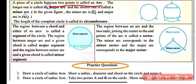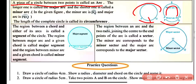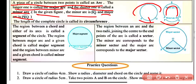A piece of the circle between two points is called an arc. Here we have two points P and Q on the circle. The shorter arc PQ is called the minor arc, and the longer arc PRQ is called the major arc. The longer one is known as the major arc and the shorter one is called the minor arc. In the given figure, minor arc is PQ and the major arc is PRQ.